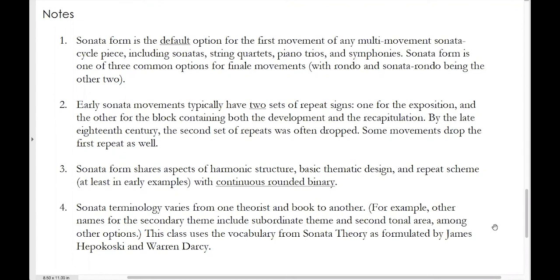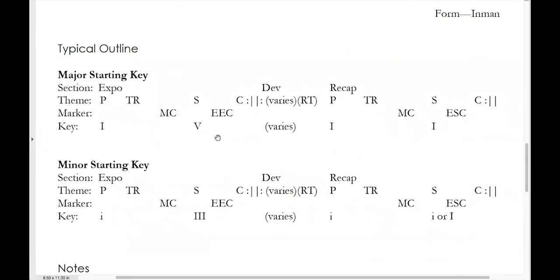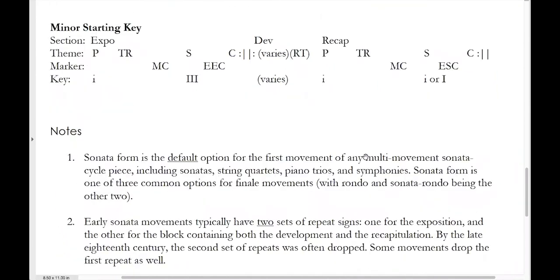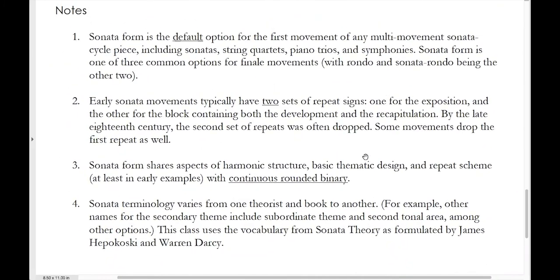Sonata form shares aspects of harmonic structure, basic thematic design, and repeat scheme — at least in early examples — with continuous rounded binary. Continuous rounded binary, like sonata form, is tonally open in the first big section. Rounded binary, like a sonata, has the reprise with the double return of the opening theme in the opening key. And like binary form, sonata form in its early manifestation has two sets of repeats — two big sections each flanked by repeat signs. One way of describing it is that sonata form is basically a continuous rounded binary on steroids.